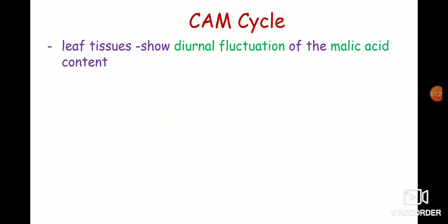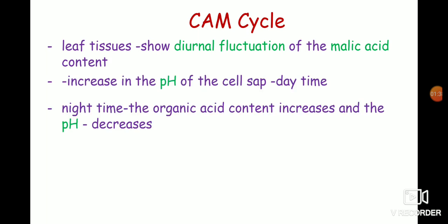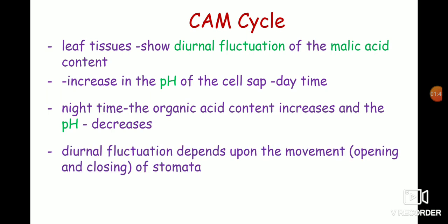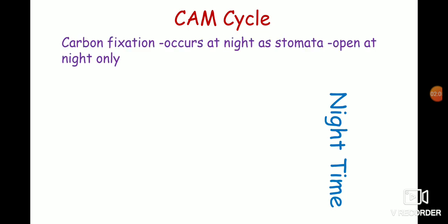The leaf tissue of CAM plants shows diurnal fluctuation of malic acid concentration, because of which there is an increase in the pH of the cell sap during daytime. While during nighttime, the organic acid content increases and the pH of the leaf cell sap decreases. This diurnal fluctuation depends on the opening and closing of stomata. In the CAM cycle, carbon fixation occurs at night as stomata in these plants open at night only.